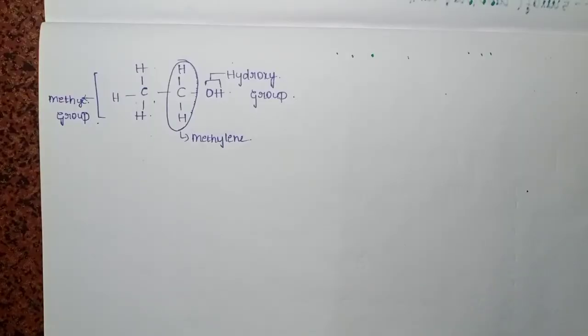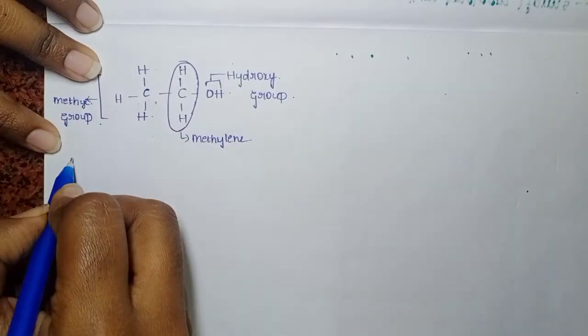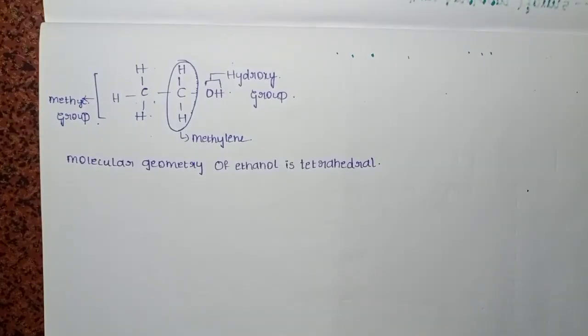What is the molecular geometry of ethanol? The molecular geometry of ethanol is tetrahedral. What is the hybridization of ethanol? Ethanol hybridization is SP3 hybridization.